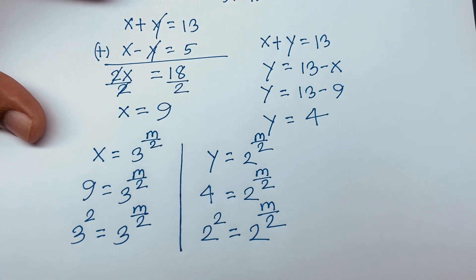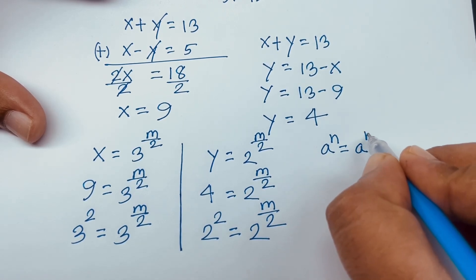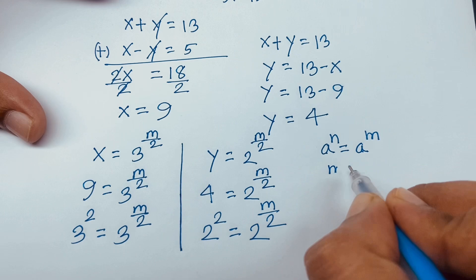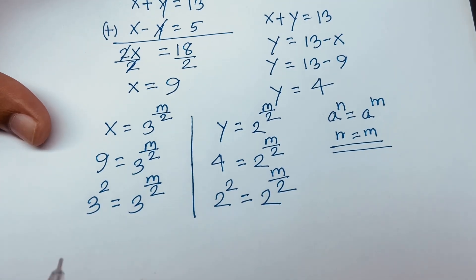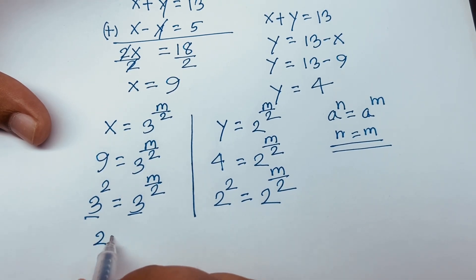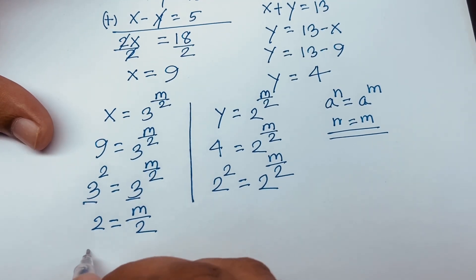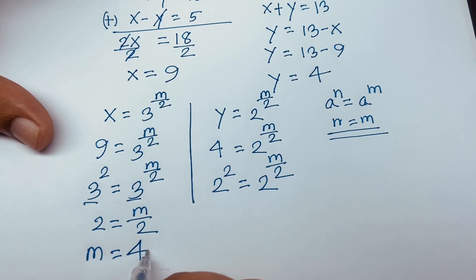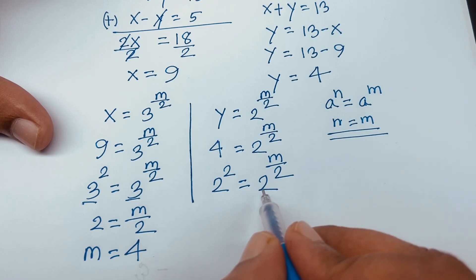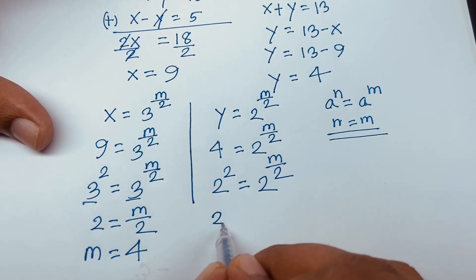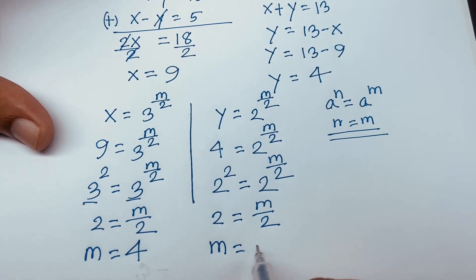By the exponential rule: if a^n = a^m and the bases are the same, then the exponents are equal. So from 3^(m/2) = 3², we get m/2 = 2. Multiplying both sides by 2, we find m = 4. The same result follows from 2^(m/2) = 2², confirming m = 4.